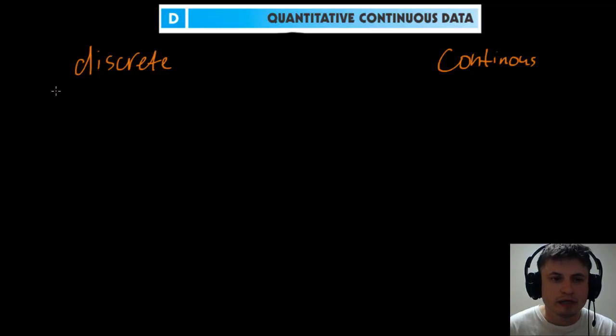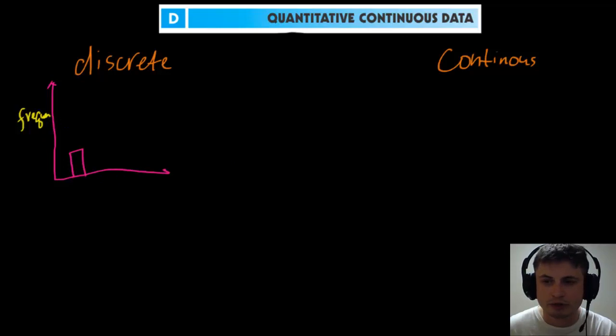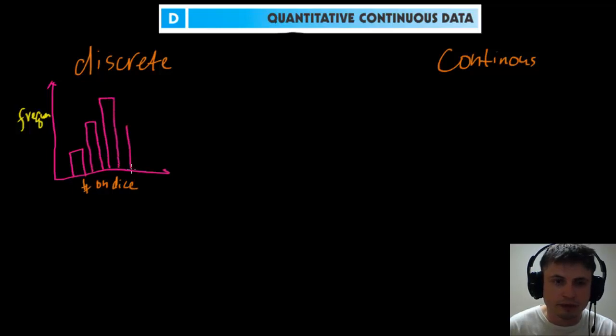In the previous video when I was talking about discrete data, we made a graph which was made up of columns. On the left side was frequency, or basically how often something appears, and on the bottom we had some kind of value, like numbers on dice. We had a bar graph that had frequency distribution. All of these numbers were very specific, they weren't somewhere in between. You can see that these columns are actually separated, so there's space between them, and this is called a column graph. Column graphs are usually or most often used with discrete statistics.